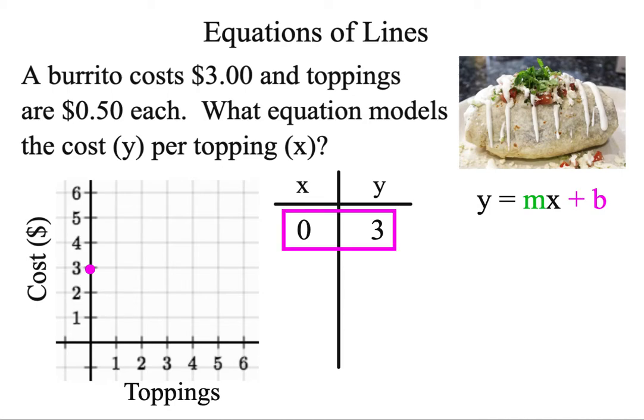That is what's called the y-intercept, or the initial value. Whenever x is 0, whatever y is, is the number or the value you're going to change b to. Why isn't it y? Because there's already a y there, that's why they use b for the y-intercept. It's a little confusing.